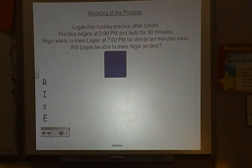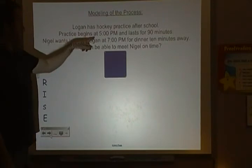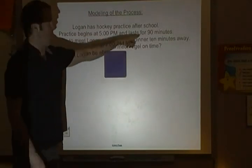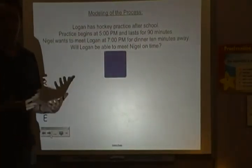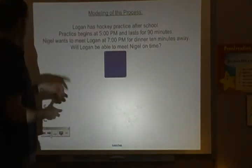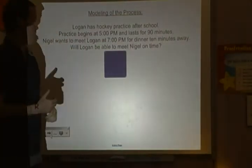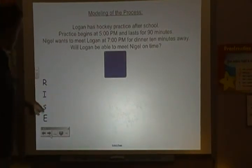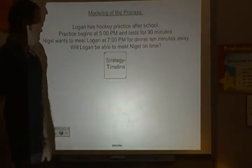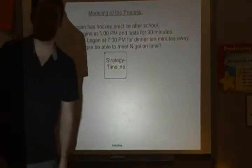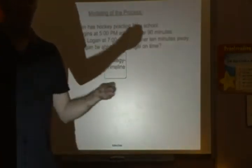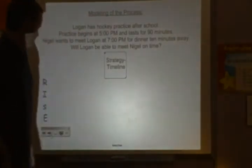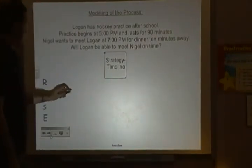So the question is: will Logan be able to meet Nigel on time? What do I know? I know when practice starts and how long it lasts, but I don't know what time it ends yet — I need to figure that out. And I know there's a little travel time after practice to the restaurant. Time to solve! The strategy I'm suggesting is using a timeline when we're dealing with elapsed time.